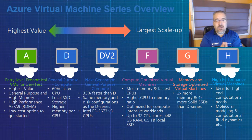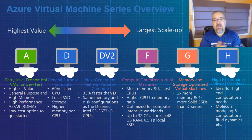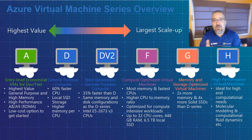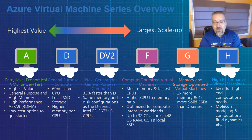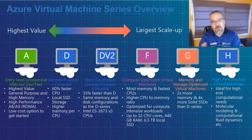Looking at Azure Virtual Machines, we go from highest value to largest scale. There's the A series, and they just launched the AV2 series which is the next generation. Then there's the D series — 60% faster than the A series — and the DV2, which is 30% faster than the initial D series. F series machines are compute-optimized, very fast for testing and scaling. As you move up this range, cost also increases.